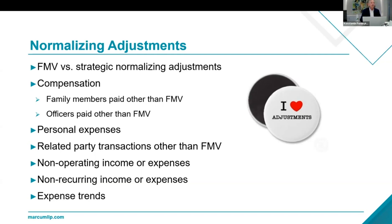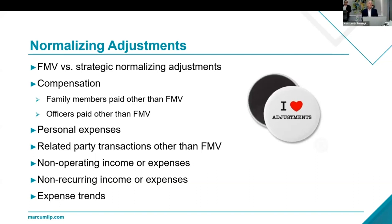You might also have related party transactions. You might be selling to a wholly owned subsidiary, so your sales might be overstated or your cost of goods sold might be over- or understated. We've got to take a hard look — we do our due diligence as we go through the process. Non-operating income or expenses get added back, along with non-recurring income, extraordinary items, and expense trends compared to others in the industry. If you have 16 cars on the business and you're not a delivery company, we're definitely going to add it back.